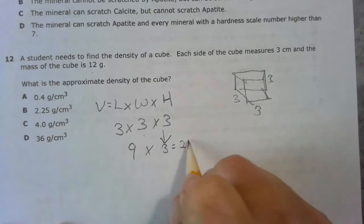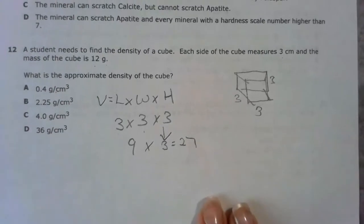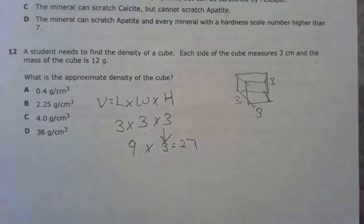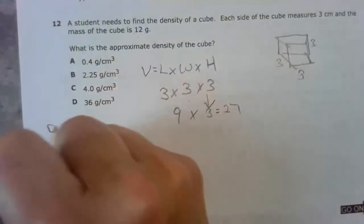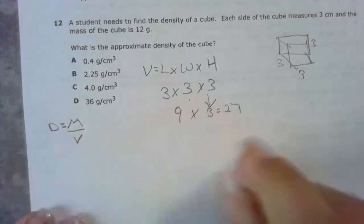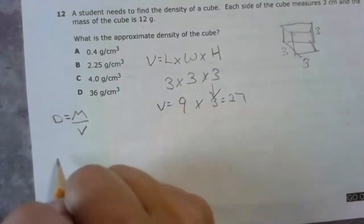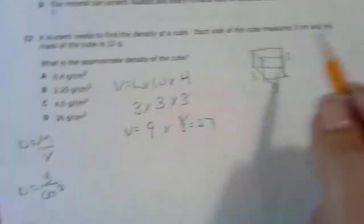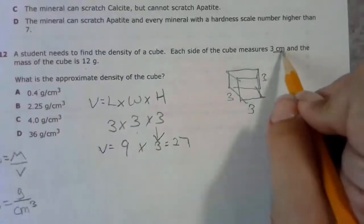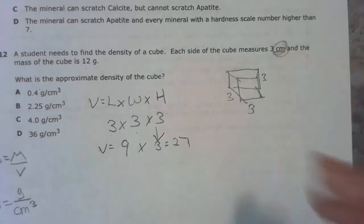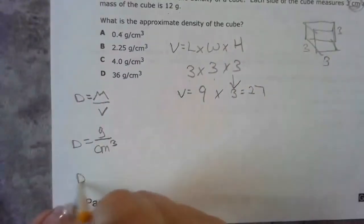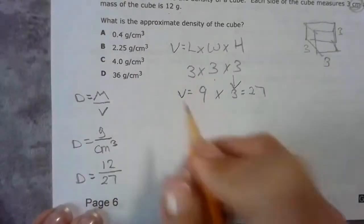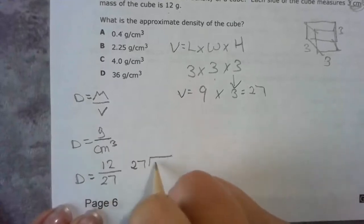So 3 times 3 is 9, times 3 is 27. Now I'm going to come over here and do density, which is mass over volume. We found our volume. Mass is in grams and volume is in cubic centimeters.